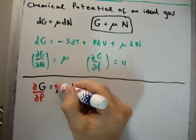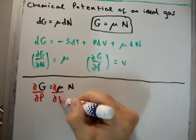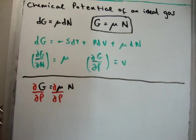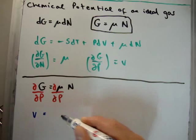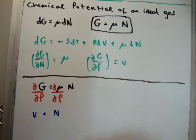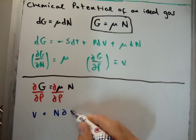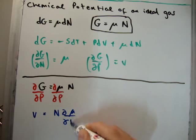And we're going to get (∂μ/∂P). Of course, N is not a function of pressure. It cannot be a function of pressure. But we already have those partials. So what we're going to have is as follows: that the volume is equal to the number of particles, capital N, times (∂μ/∂P).